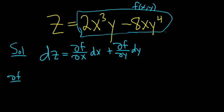So del f del x. When you compute del f del x, you fix all of the other variables. Everything is constant except x. So here the 3 will come down, so we'll get 6x squared. We'll use the power rule. And the y hangs out because the y is a constant. And then here, the 8 and the y to the 4 hang out. So we just take the derivative of x, which is 1. So we get minus 8y to the 4.